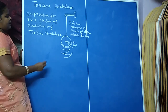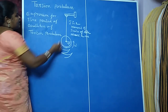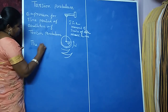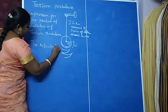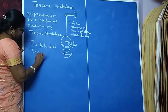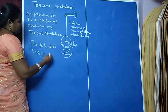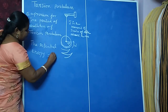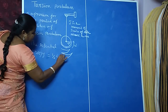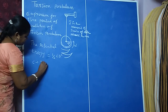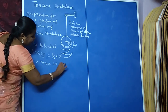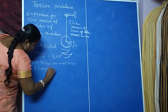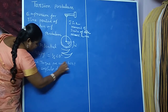To find the time period, we have to consider the energy of the system. The entire system is called the Torsional Pendulum. The potential energy is nothing but the total work done to displace the disk through an angle theta, that is equal to half of c theta squared, where c is the torque per unit twist and theta is the angular displacement or angular twist.